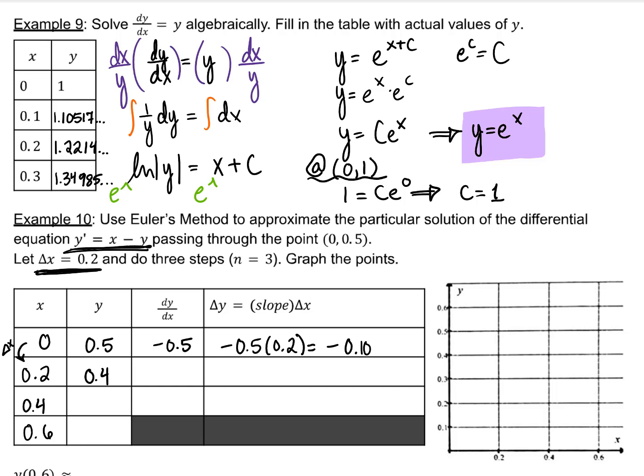And repeat the process. x minus y is our slope. Add negative 0.04 to 0.4, the previous y value.